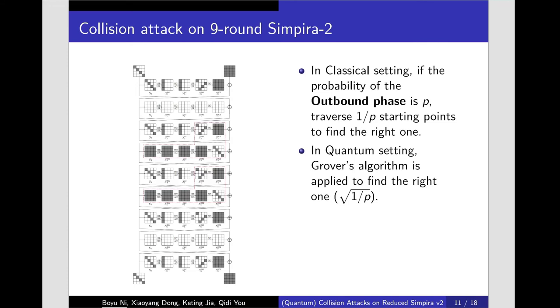In classical setting, if the probability of the outbound phase is P, then traverse 1/P starting points to find the right one.